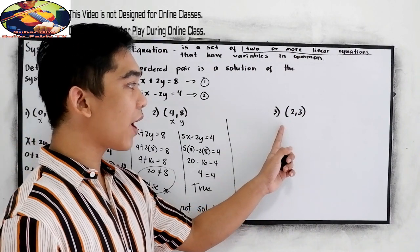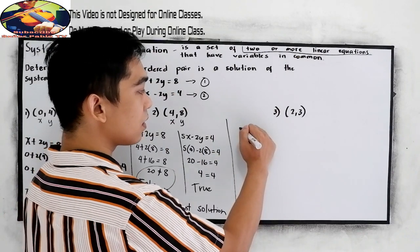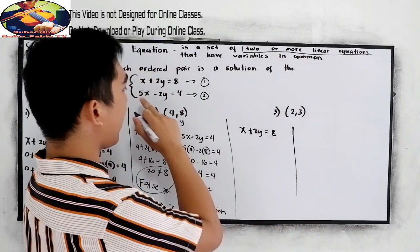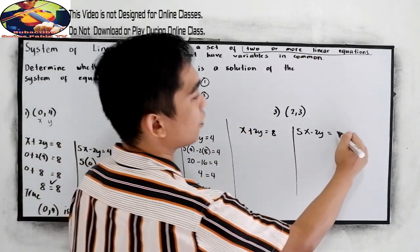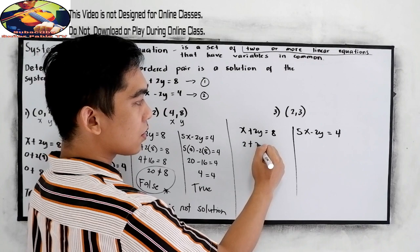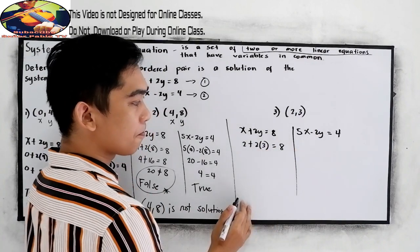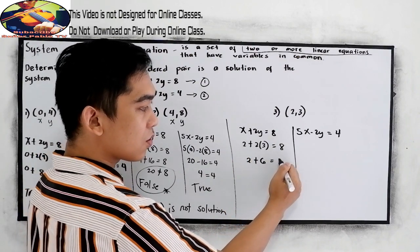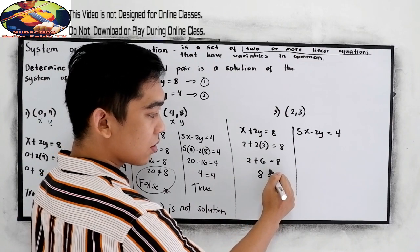Next, let us try example number 3, problem number 3. We use the same equations: x plus 2y equals 8, and 5x minus 2y equals 4. Substituting the point (2, 3): 2 plus 2 times 3 equals 8, which gives 2 plus 6 equals 8. So this is correct.